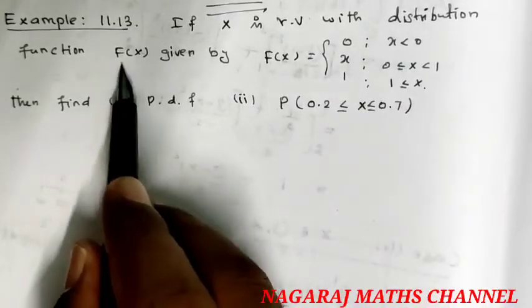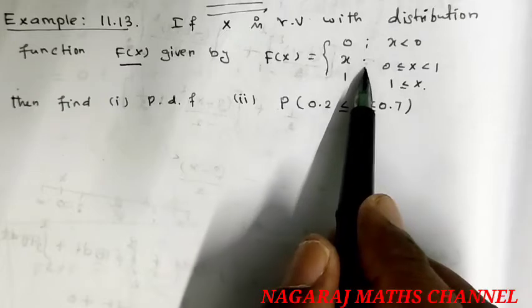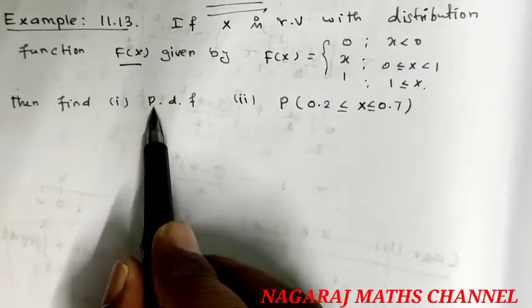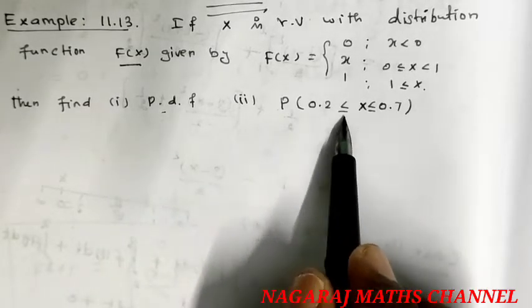If x is a random variable with the distribution function capital F of x given by capital F of x, then find the probability density function and probability function.